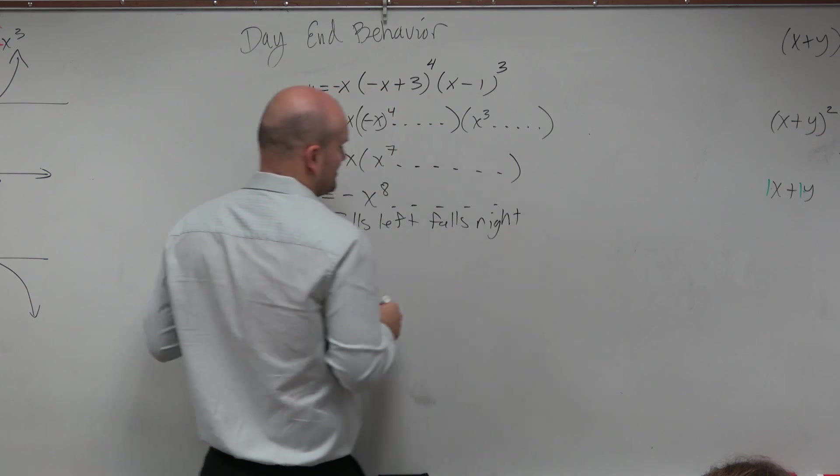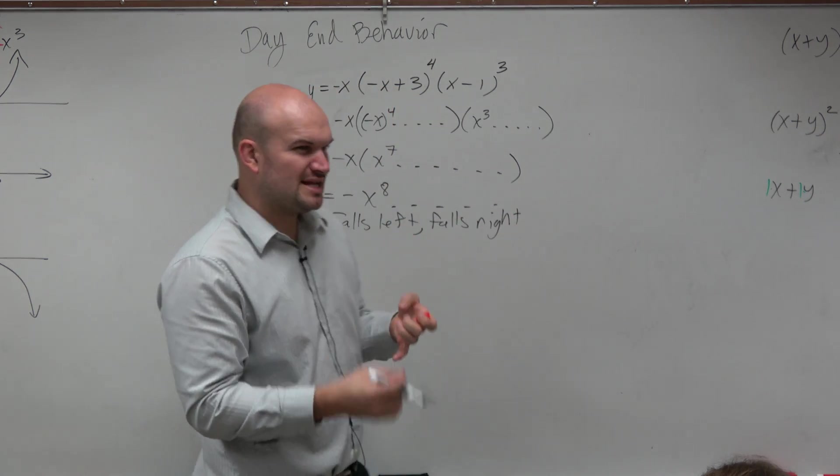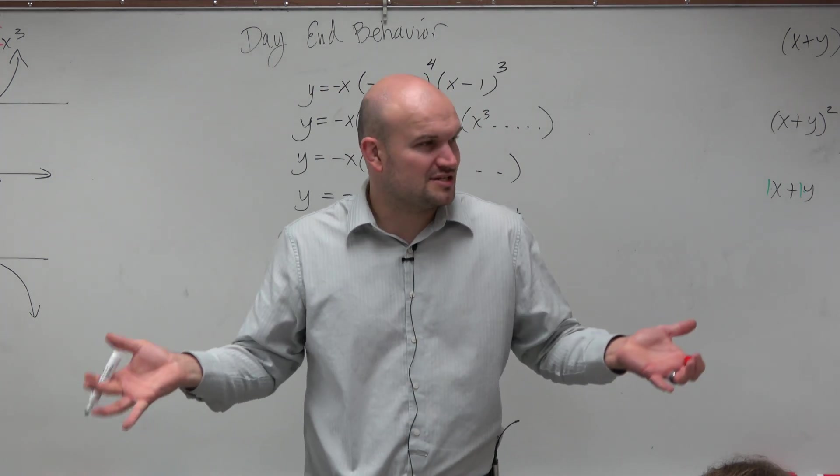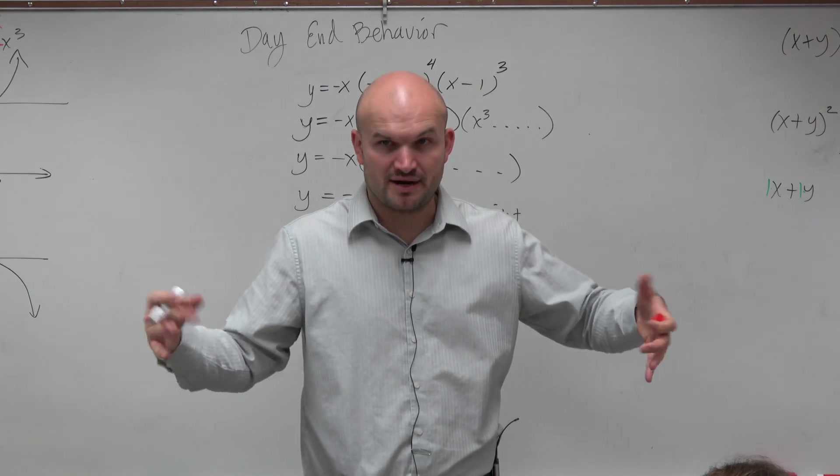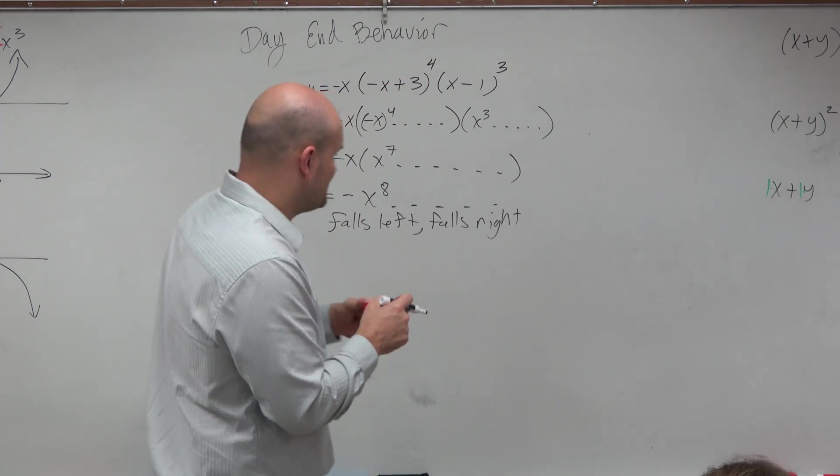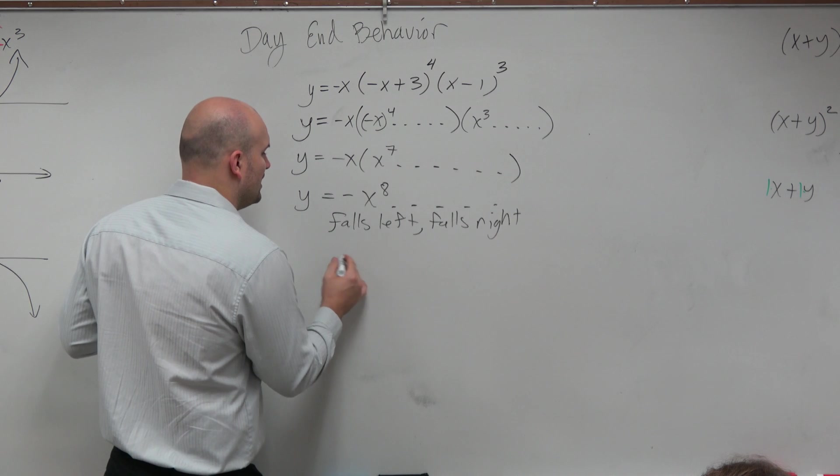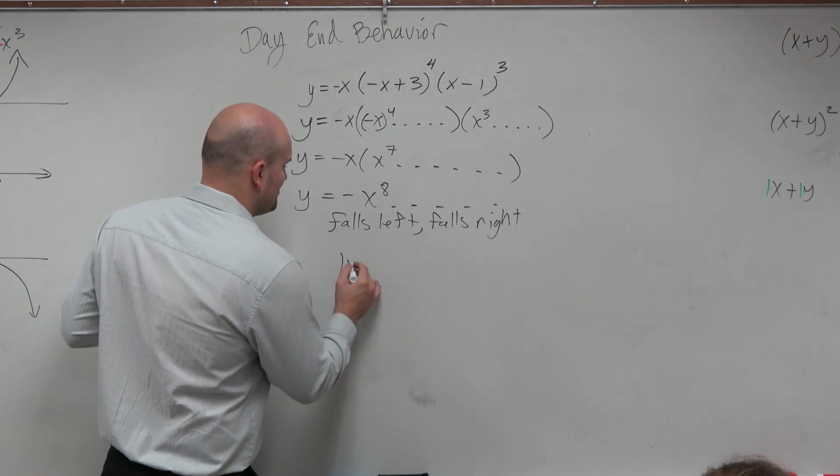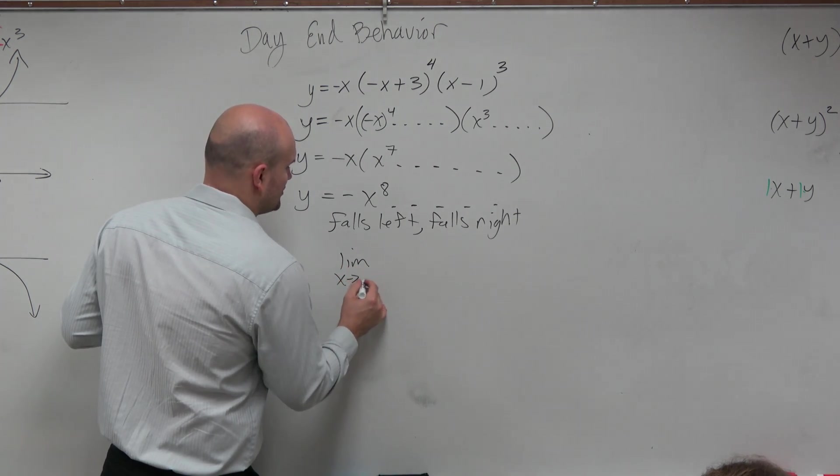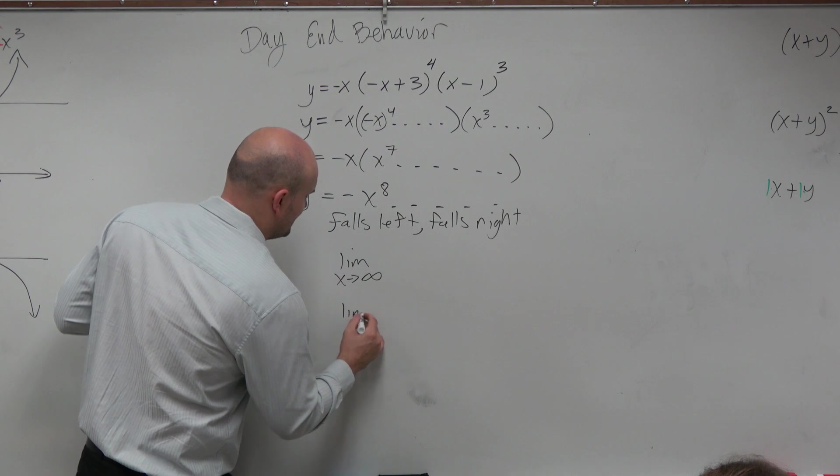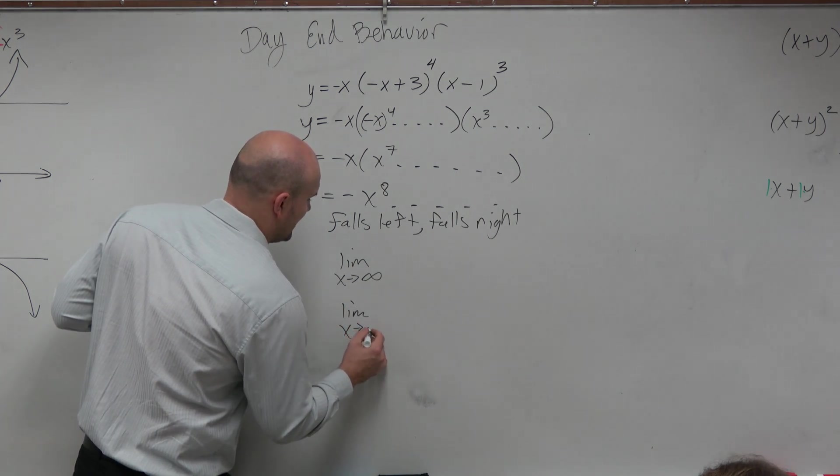That helps me a lot of times with understanding the end behavior, because that's what I practice so much in algebra two. Oh, falls left, falls right. But then I'm going to have limit notation basically prepared for you, ready for you guys. So this would be limit as x approaches infinity and the limit as x approaches negative infinity.